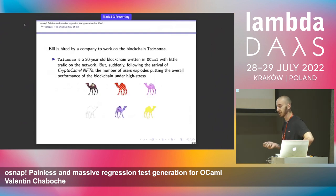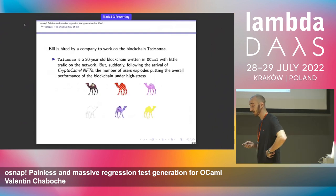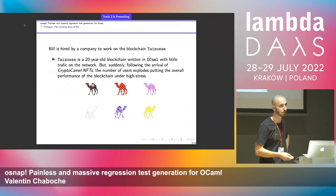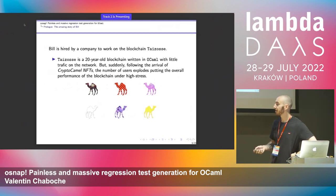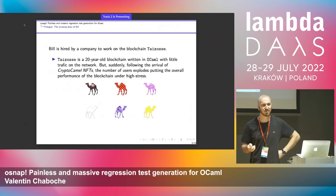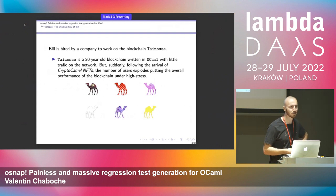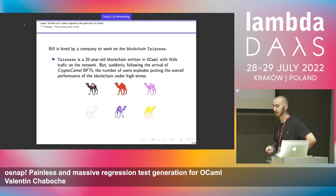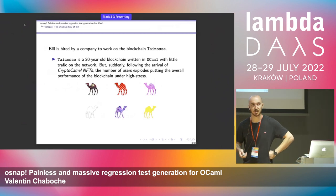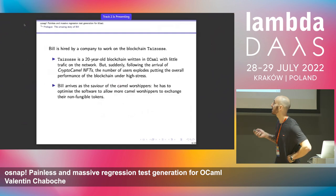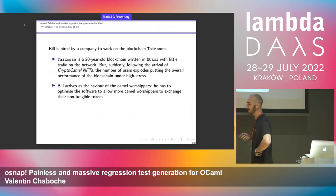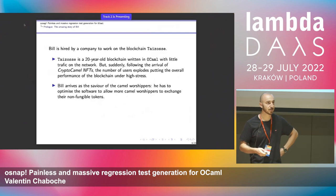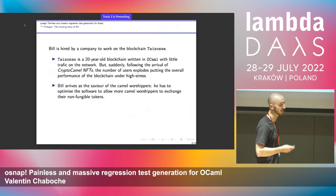This blockchain is 20 years old, written in OCaml as well, with very little traffic on the network. But suddenly, with the arrival of crypto camel NFTs and all that, the number of users exploded, putting the overall performance under great pressure. That's where Bill arrives — the savior of camel worshippers — needing to optimize the software so users can action their non-fungible tokens.